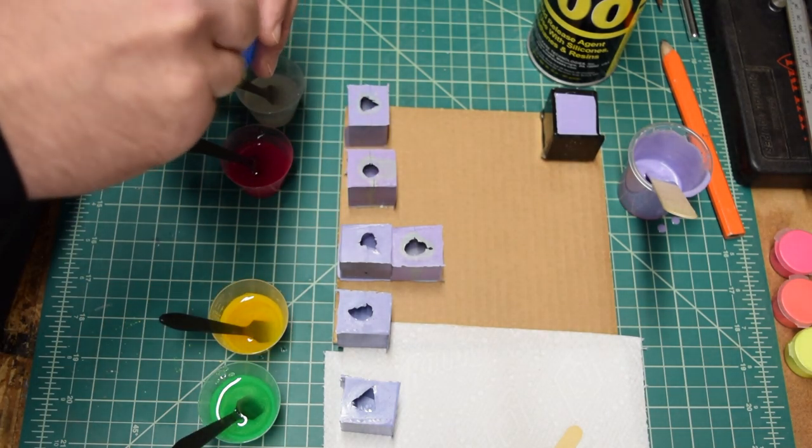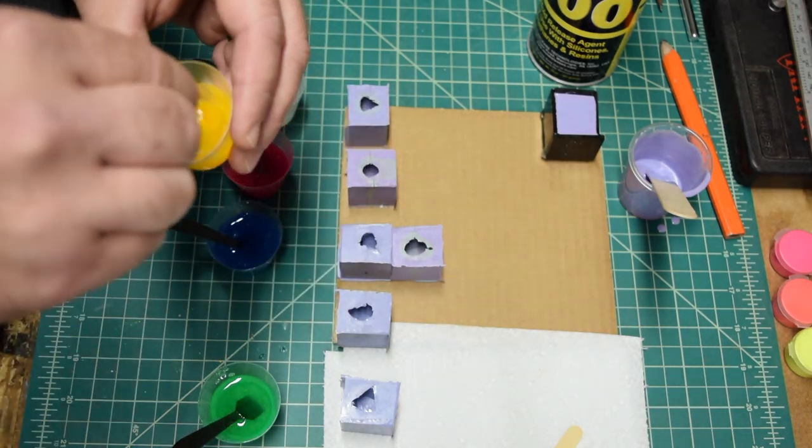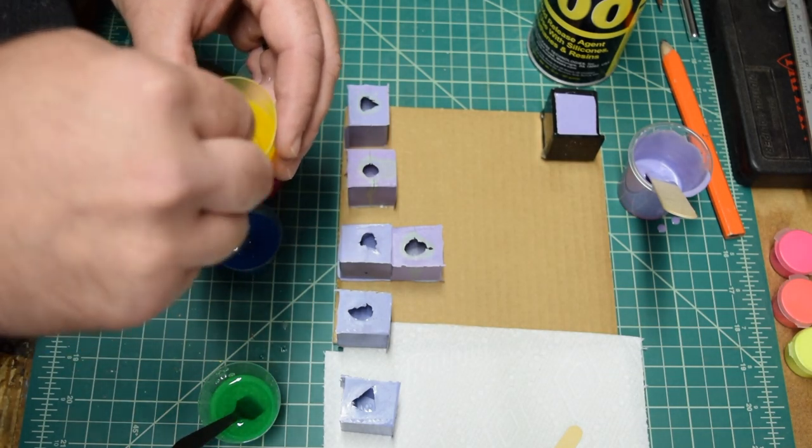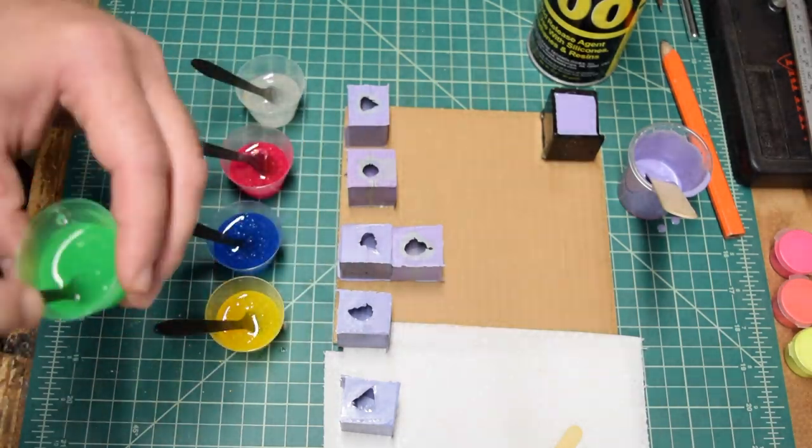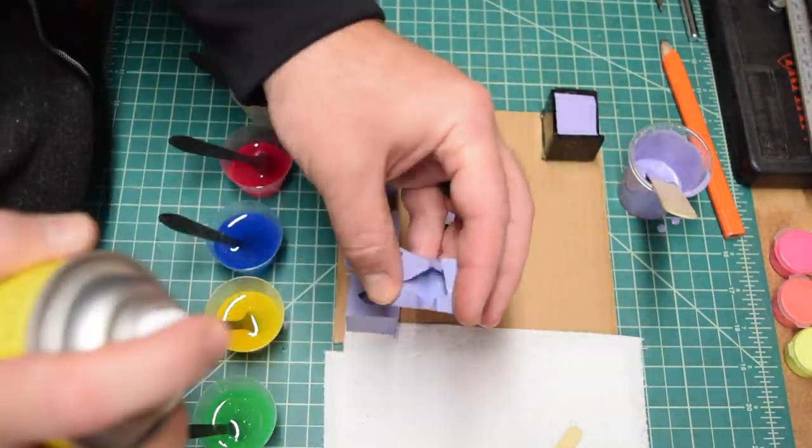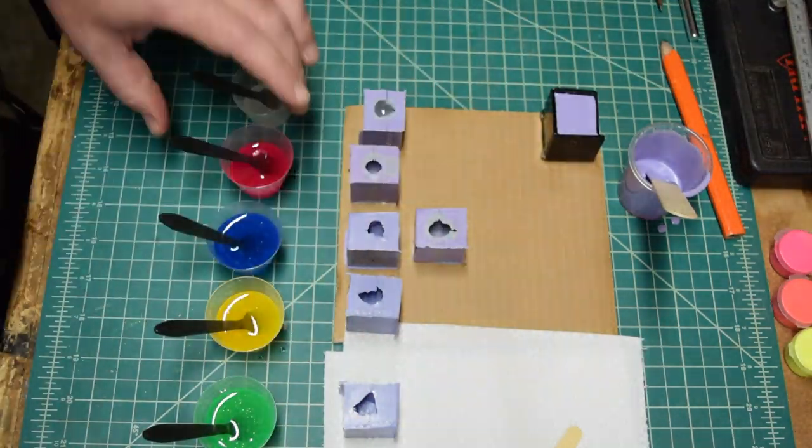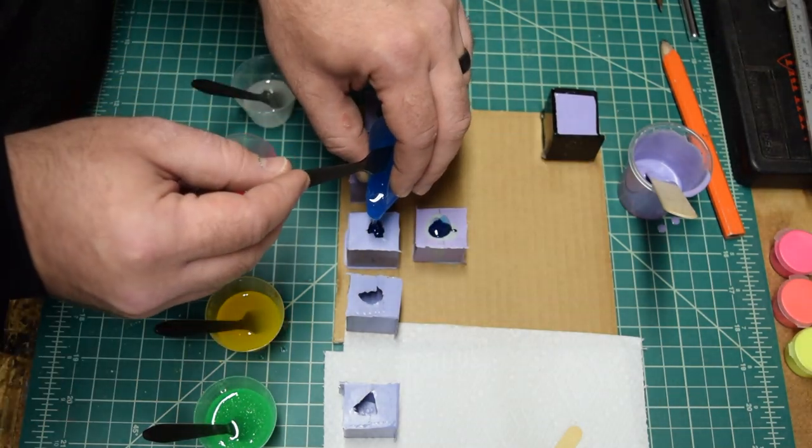The epoxy has a 24 to 72 hour total cure time. This is why I chose to make multiple molds and do a batch casting. With a longer cure time, you might want to reinforce the molds with some blue tape as the epoxy tends to leak out over time.